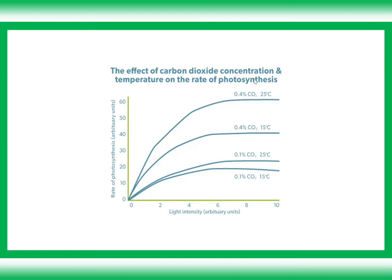Increasing temperature gives optimal rate of photosynthesis under the right conditions. When you have high CO2 and then increase temperature from 15°C to 25°C, there is a huge difference. But when CO2 percentage is very low, the change in temperature produces only a slight change in rate. This proves how carbon dioxide and temperature affect the rate of photosynthesis, and how temperature plays a role in enzyme activity.